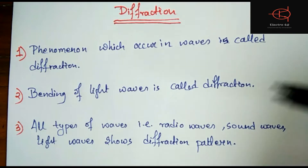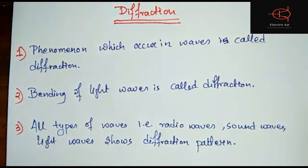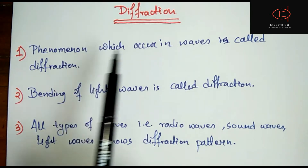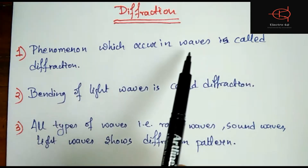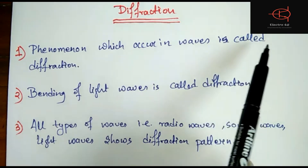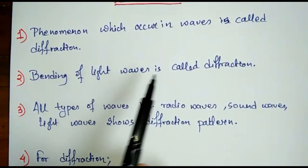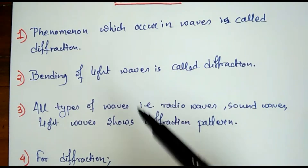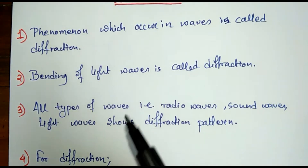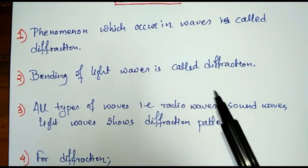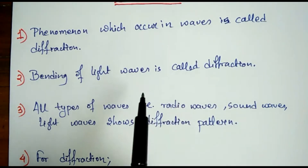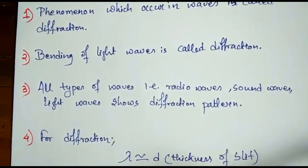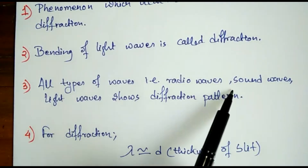Diffraction occurs very frequently in sound, but in light waves diffraction cannot be seen without some specific conditions. The phenomenon which occurs in waves is called diffraction, and those waves can be sound waves or light waves. The bending of light waves is called diffraction — that is, when you pass light through an obstacle, the bending of those light waves is called diffraction. All types of waves — radio waves, sound waves, light waves — show a diffraction pattern.